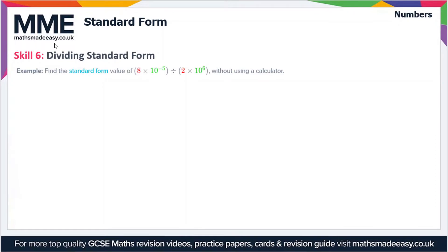Moving on, the last skill we'll look at is dividing standard form values. In this example, we have to find the standard form value of 8×10⁻⁵ divided by 2×10⁶ without using a calculator.